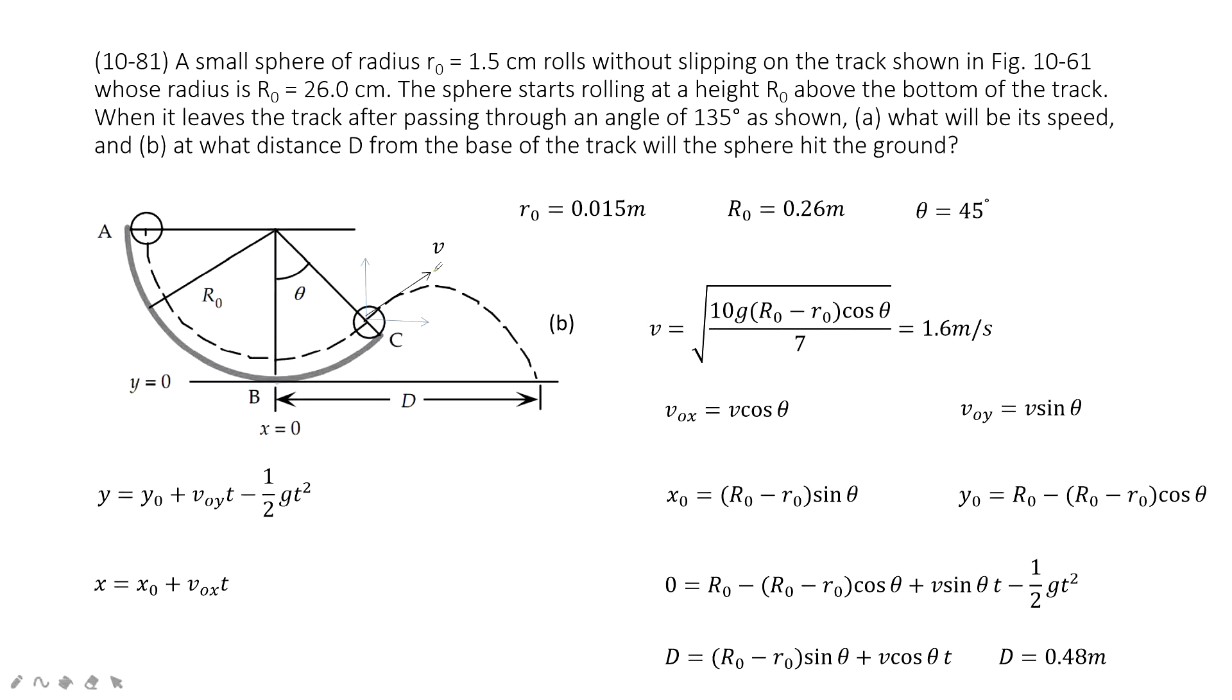So we project the velocity V in two components. This angle is theta. So of course, we can get V cosine theta as this angle is theta. And then we project the velocity in x component and y component.